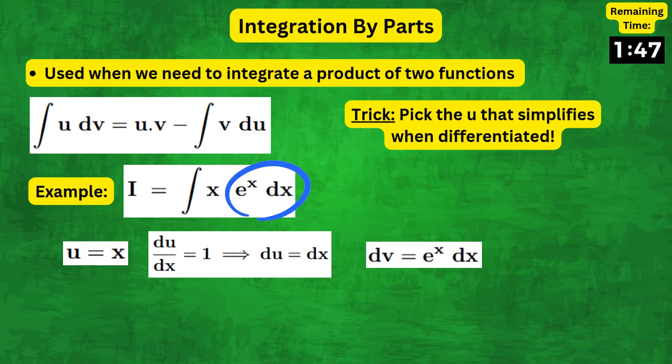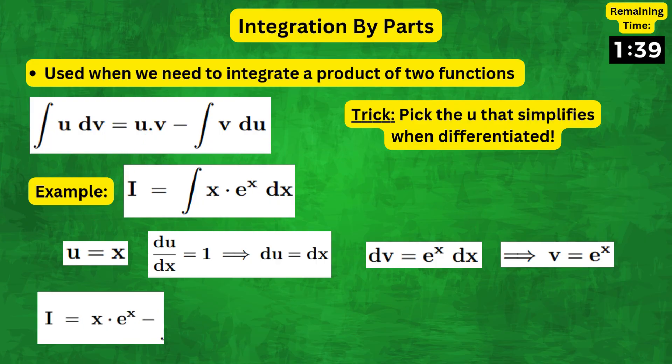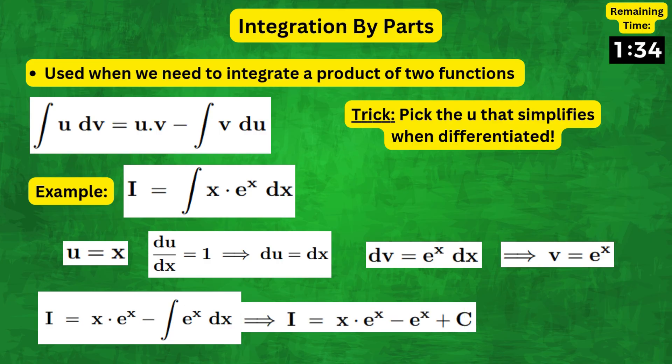And integrating that, we get v equals e to the x. So, plugging all of this into the above formula, we get x e to the x minus integral of e to the x dx, which results in the answer x e to the x minus e to the x plus C.